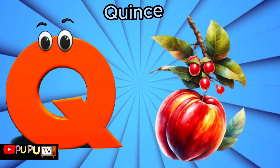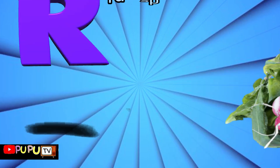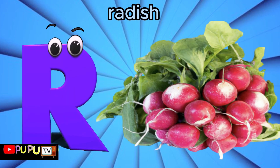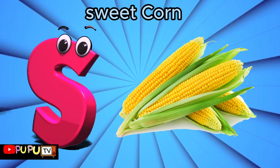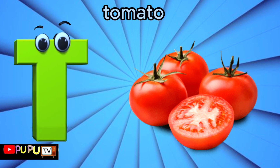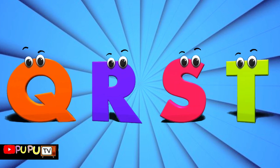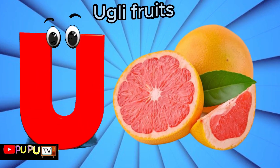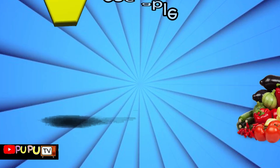Q is for quince. R is for radish. S is for sweet corn. T is for tomato. U is for ugly fruit. V...